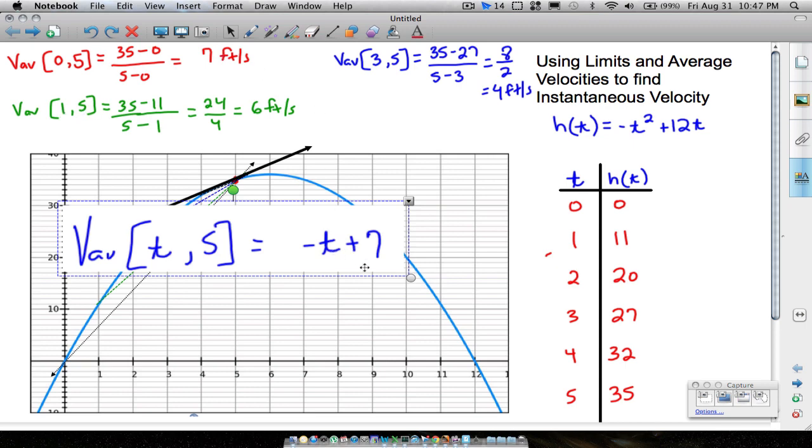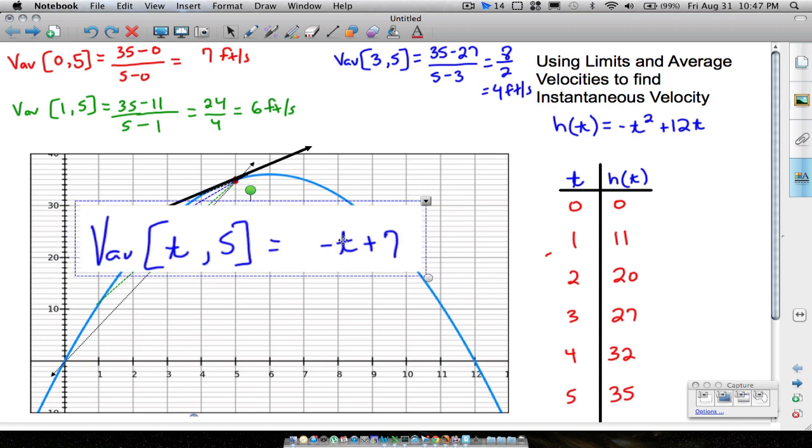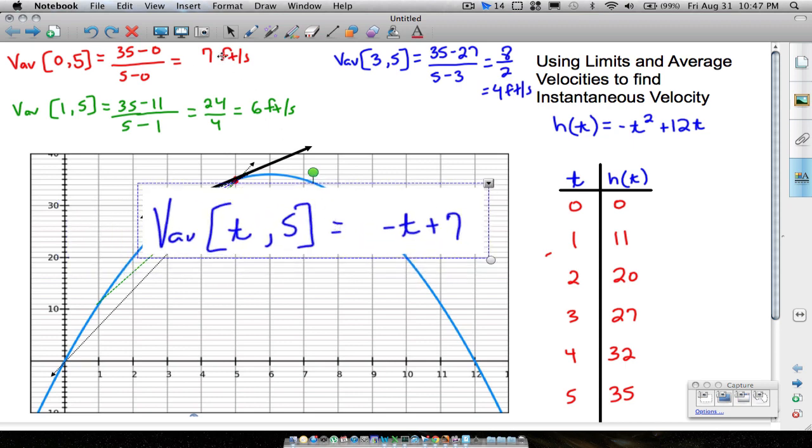Plug in 1 into this function, negative 1 plus 7, look at that, 6 feet per second. Plug into 3, negative 3 plus 7, 4 feet per second. Notice how this formula helps us get those average velocities a lot quicker versus doing that slope formula every time.